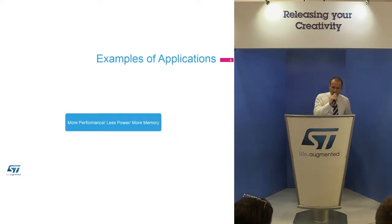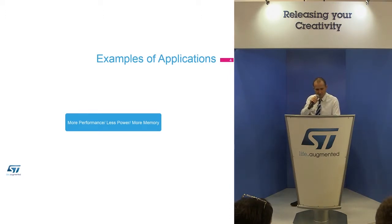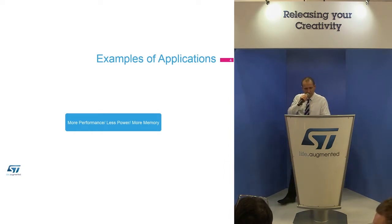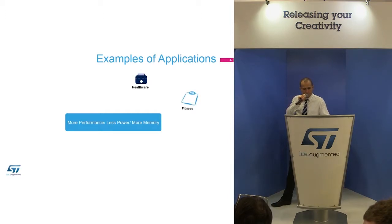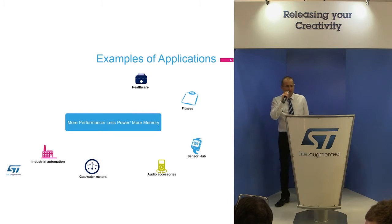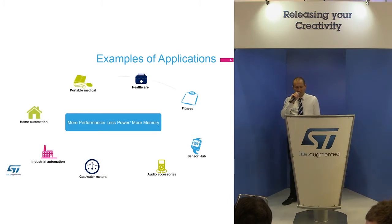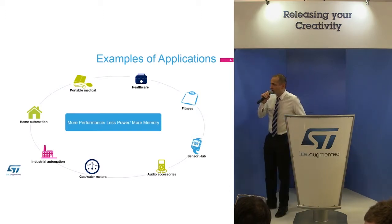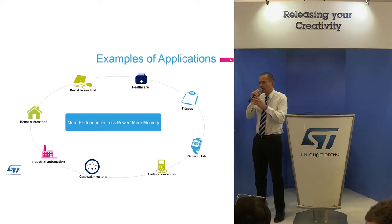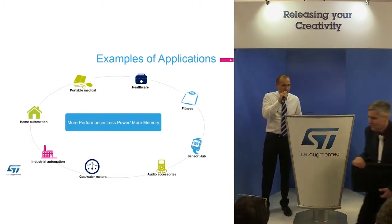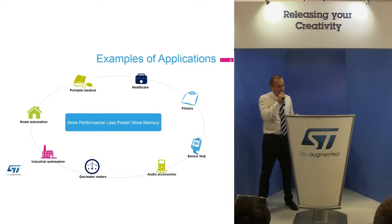So which kinds of applications need these three requirements — more performance, less power, and more memory? Here are some examples. Applications regarding fitness, healthcare, or sensor hub — all the algorithms known in the market. You need DSP instructions and floating point units to be more efficient.